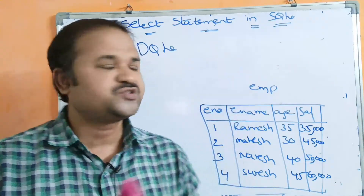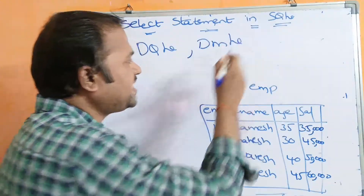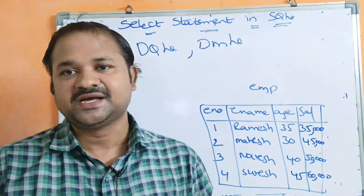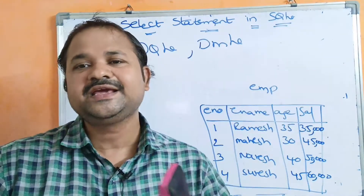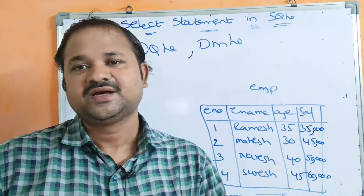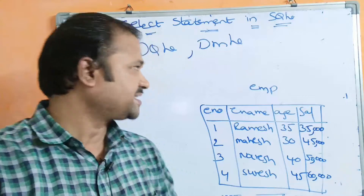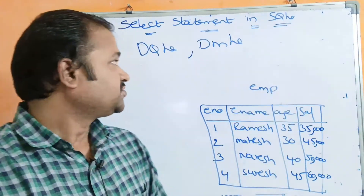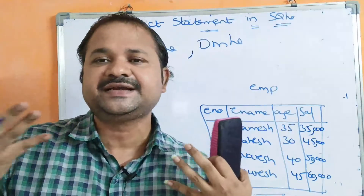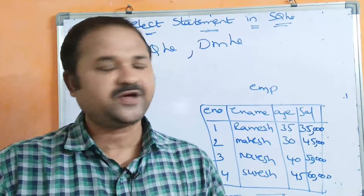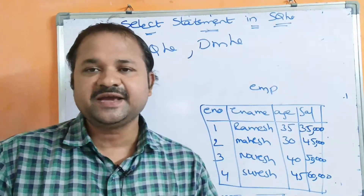SELECT command can also be called a DML statement. DML stands for Data Manipulation Language. But by using SELECT command, we cannot perform any changes in the database — we can only select and display some data on the database server. So SELECT is not a 100% DML statement; it is called both a DQL as well as a DML statement.